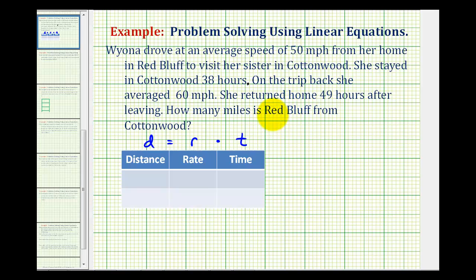Notice how we're asked to determine the distance. So let's call the distance to Cottonwood d sub t and the distance from Cottonwood d sub f. Now even though we're trying to determine the distance from Red Bluff to Cottonwood, we know that these two distances are going to be the same. So d sub t is going to equal d sub f.